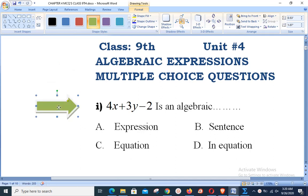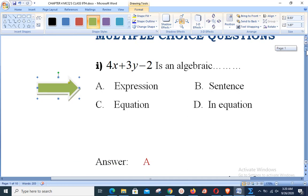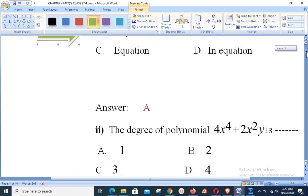Statement number 1: 4x plus 3y minus 2 is an algebraic dash. We have four options: either an expression or a sentence or an equation or in equation. You can see it is the combination of different terms, and that is the definition of an algebraic expression. So option A is the correct answer.